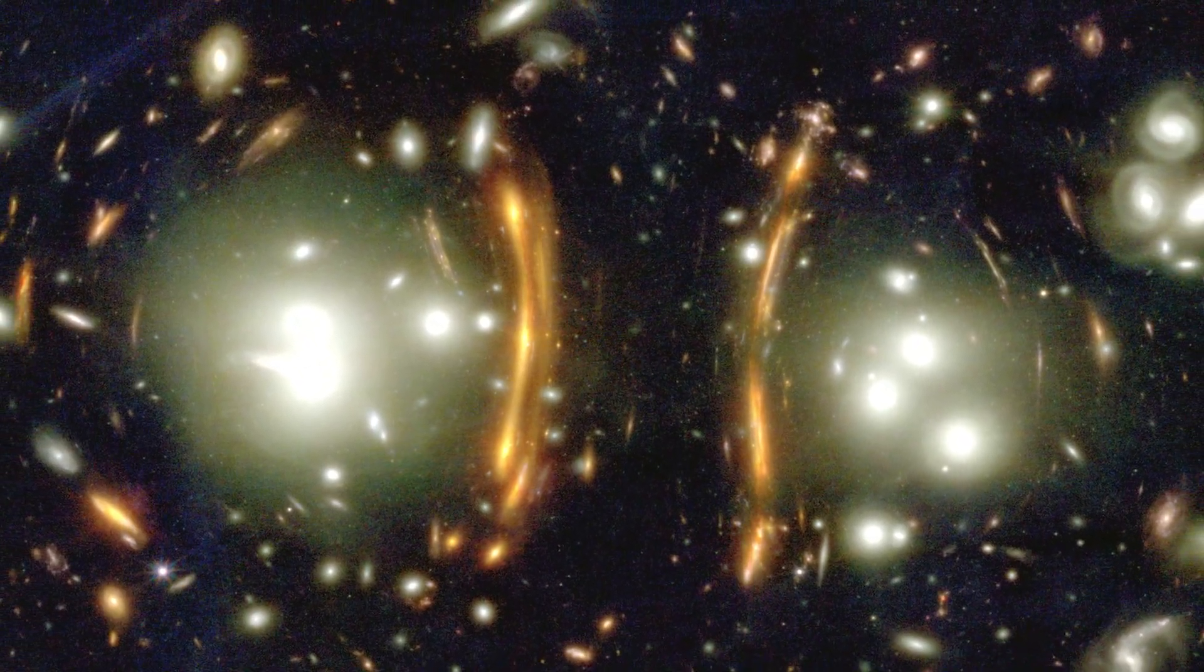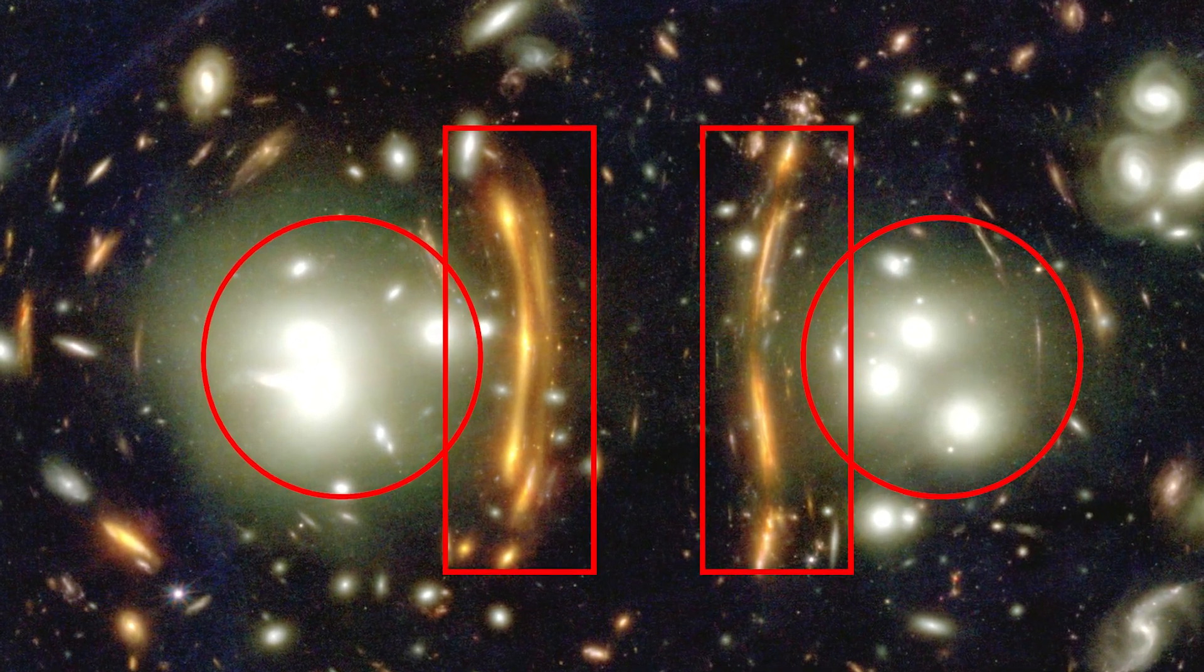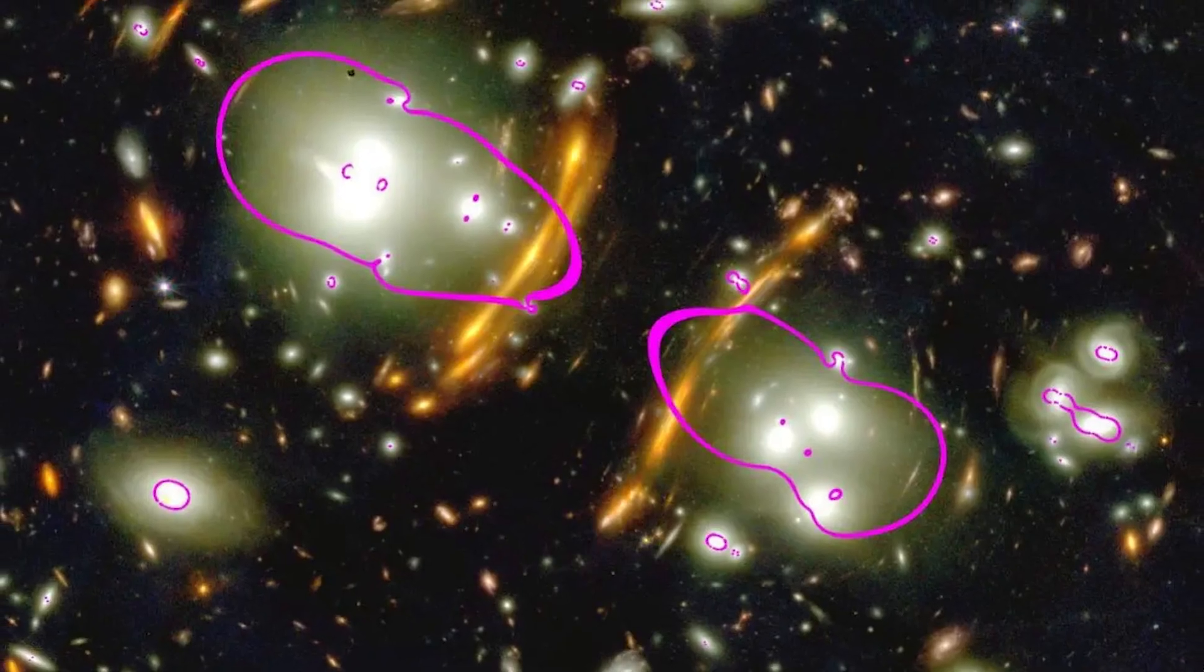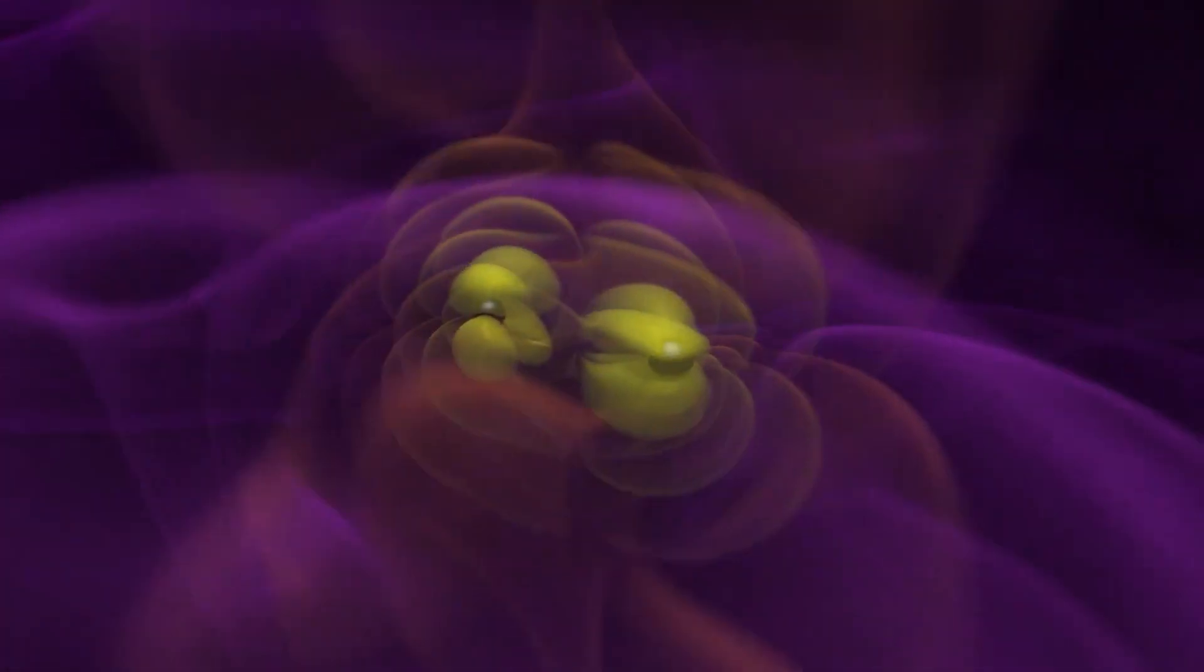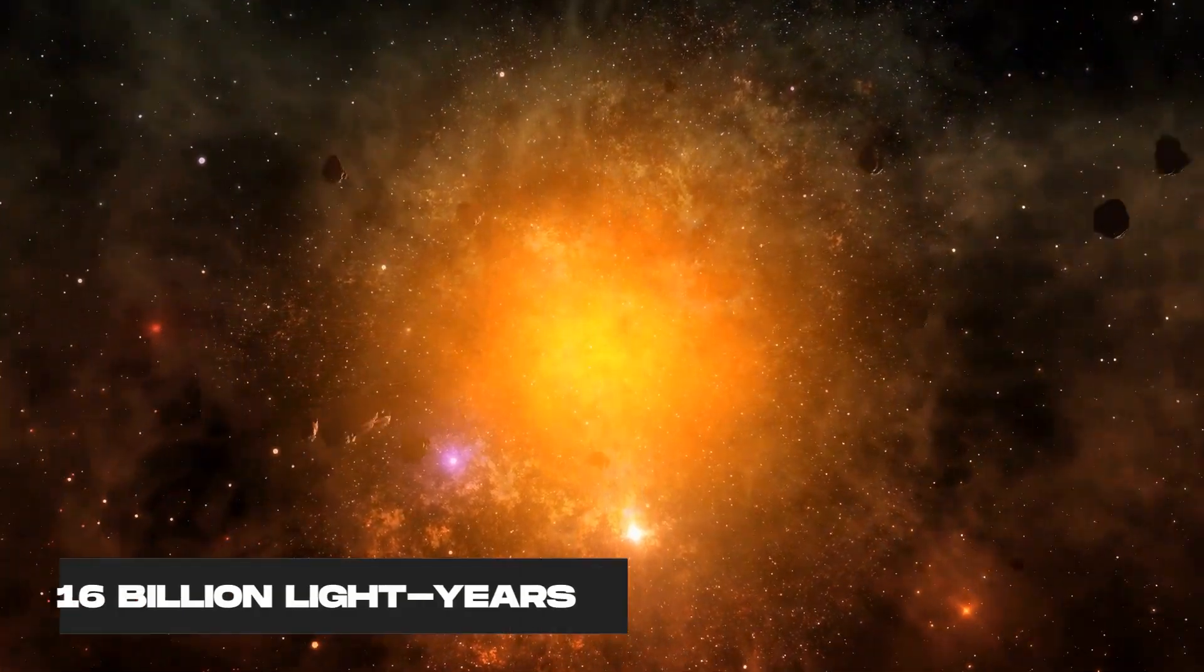But what's really cool is that around this galaxy gang there's a curve of orange light with three bright dots. These are not stars or planets or space rocks. They are actually copies of the same supernova that went boom behind the galaxies about 16 billion light years away from us. How crazy is that?